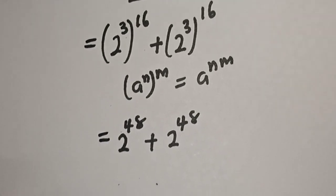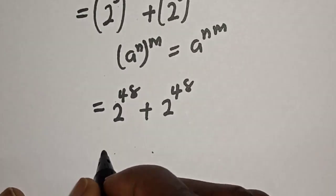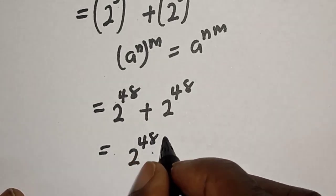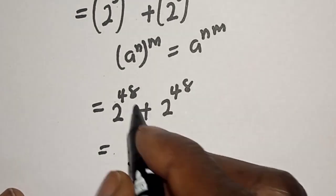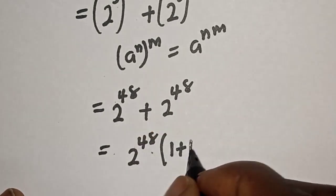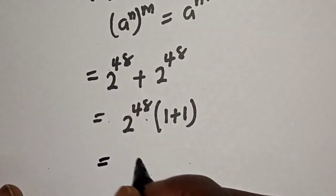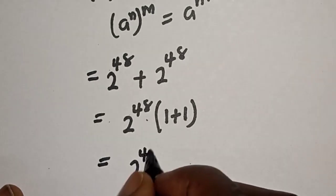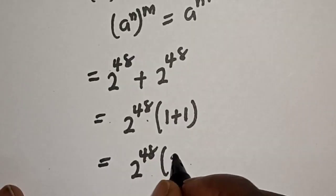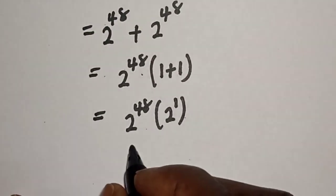2 raised to power 48 is common, so we factor it out: 2 raised to power 48, bracket 1 plus 1, which equals 2 raised to power 48 times 2. And this 2 is also 2 raised to power 1.